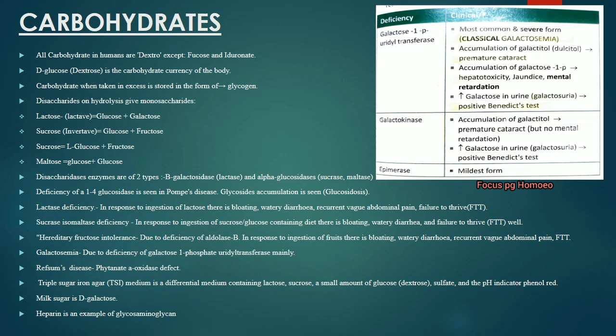Lactase deficiency presents with bloating, watery diarrhea, recurrent vomiting, abdominal pain and failure to thrive. Sucrase-isomaltase deficiency presents similarly with bloating, watery diarrhea and failure to thrive on ingestion of sucrose or starch. Hereditary fructose intolerance (aldolase B deficiency) causes bloating, watery diarrhea and failure to thrive in response to ingestion of fruits.